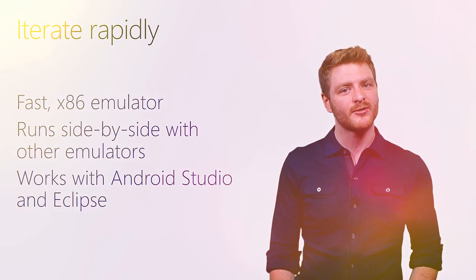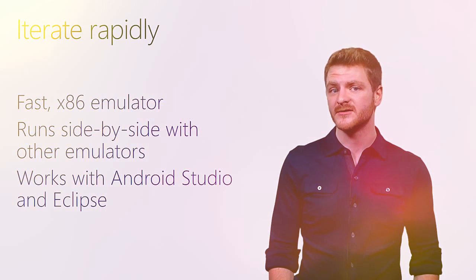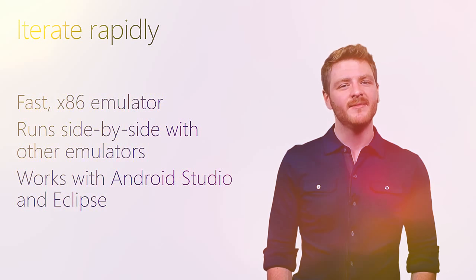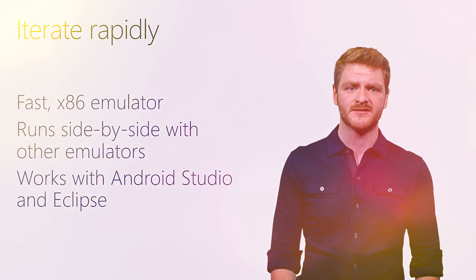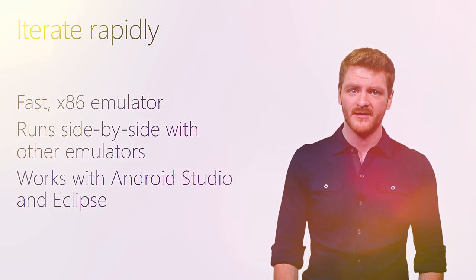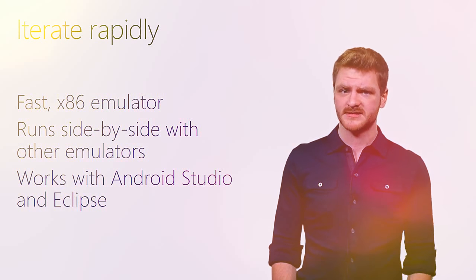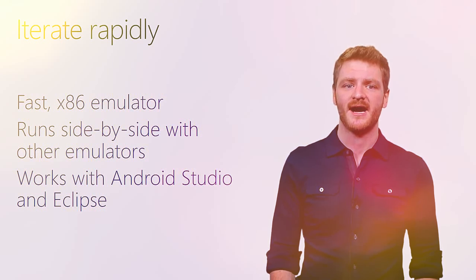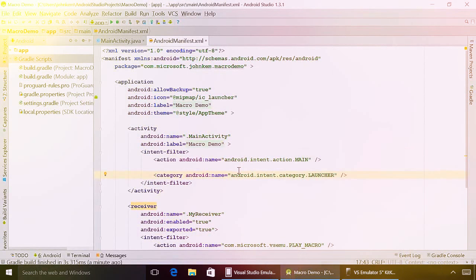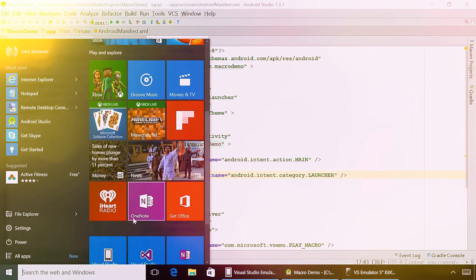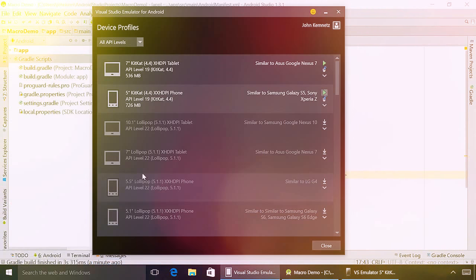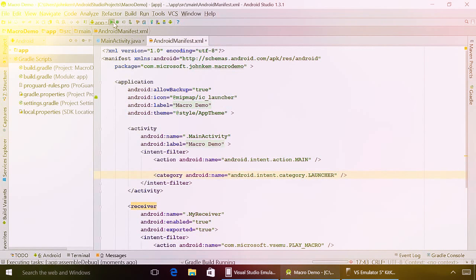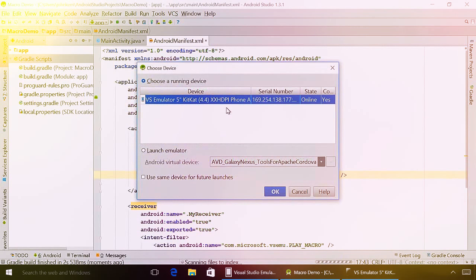Our x86 Android emulator boots faster than other emulators and runs at nearly the speed of a real device, even when debugging graphics and processor-intensive apps. It runs side-by-side with the Windows Phone emulator and other Hyper-V VMs, making cross-platform development easy without toggling system settings. But to iterate rapidly, you also need it to work seamlessly with your favorite IDEs. The emulator is available as a free download, so you can run it from the start menu and hit play, and it appears as a debug target directly in Android Studio via ADB.